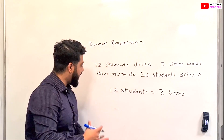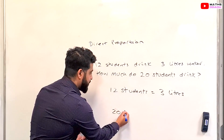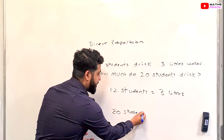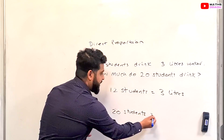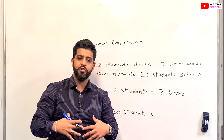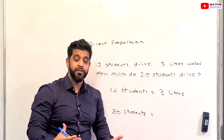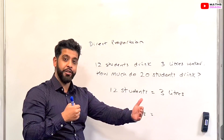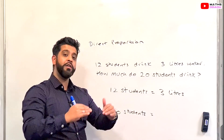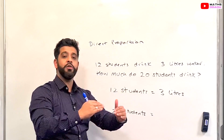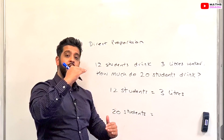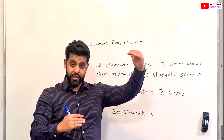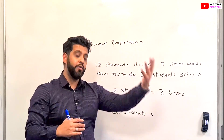If you're going to have 20 students drinking water, then obviously the amount of water consumed is going to increase. So this is a direct relationship — as one goes up, so does the other. As the number of students goes up, the number of liters of water required also goes up.